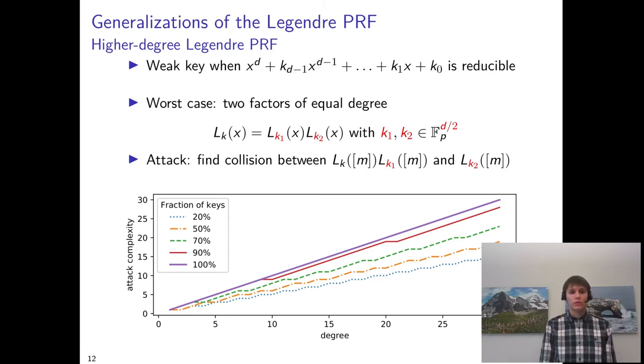So here, we simply need to do roughly log p queries to the PRF. And then we can find a collision between two sequences, one of which depends on k1 and the other depends on k2. And if this collides, then probably we know what k1 and k2 are.